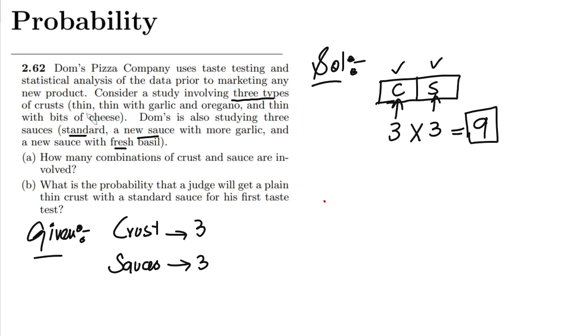Okay, so how is it possible? You can also consider from here that with thin crust you can either have standard, new sauce, and a new sauce with fresh basil, so three choices. Similarly for the second crust you can again have the three choices, and with the third crust you can also have the three ones. So three plus three plus three is nine, which is basically three by three, and that is nine.